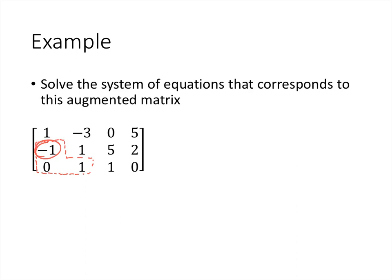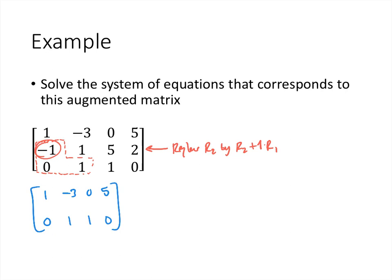The first thing we need to do is turn the negative 1 into a 0. We want to use numbers in the same column without wrecking existing zeros. The 1 above the negative 1 will help. So we replace row 2 by row 2 plus 1 times row 1. That doesn't change rows 1 or 3. For row 2: 1 plus negative 1 is 0; negative 3 plus 1 is negative 2; 0 plus 5 is 5; 5 plus 2 is 7.